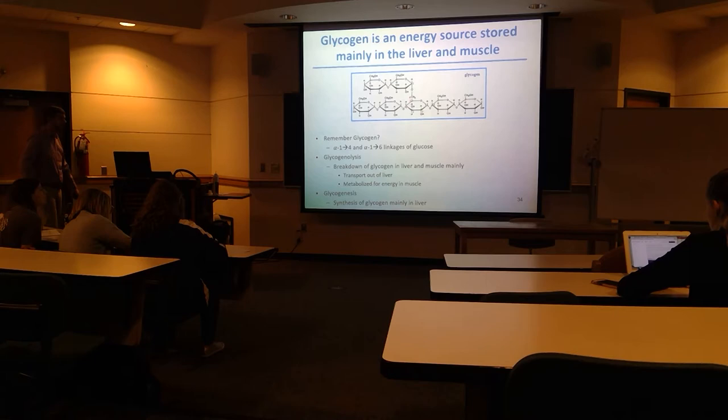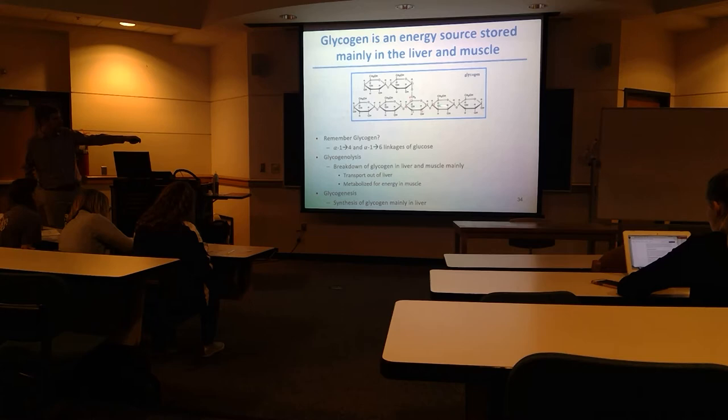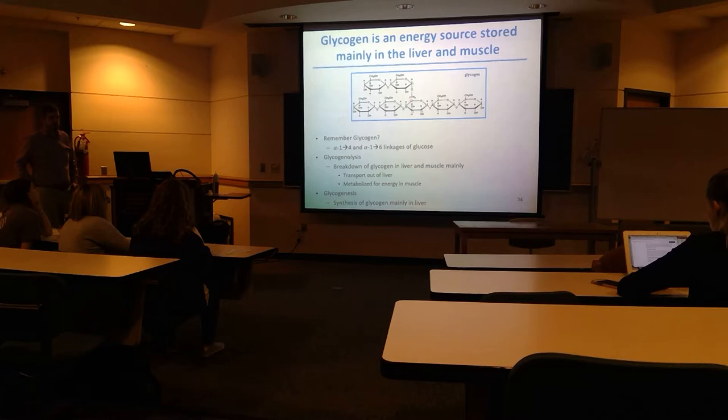Glycogen is all glucose — it's a storage form of glucose. We have glucose linked alpha-1,4 in the linear parts of glycogen, and then alpha-1,6 linked for the branch points every once in a while. It forms a branched glucose tree in the glycogen storage molecule.